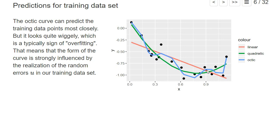It seems to fit structure that's not necessarily there. The form of the blue curve seems to depend a lot on random noise.